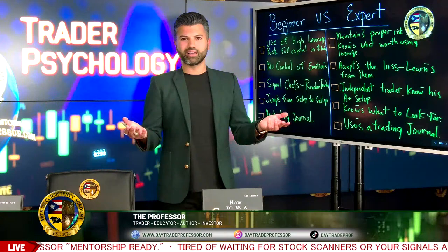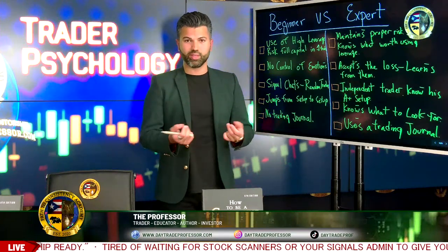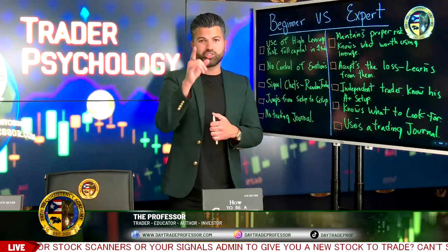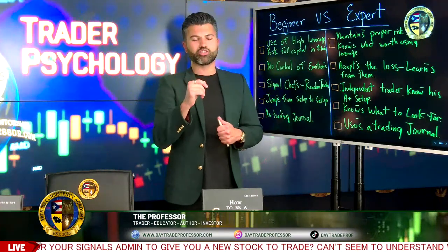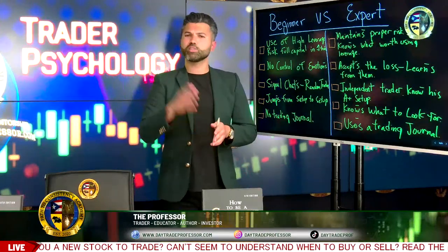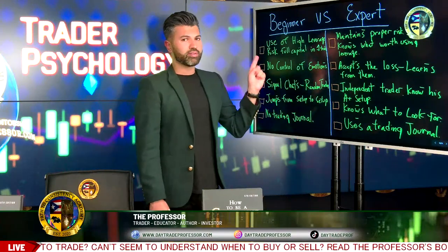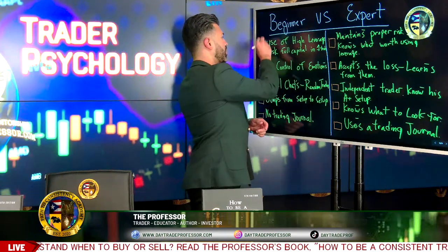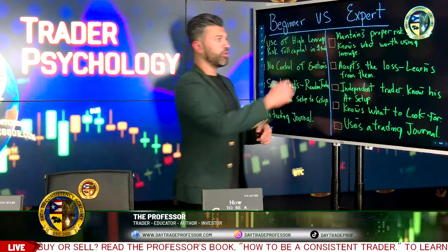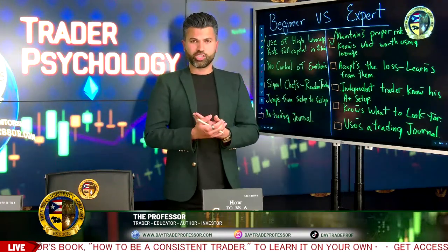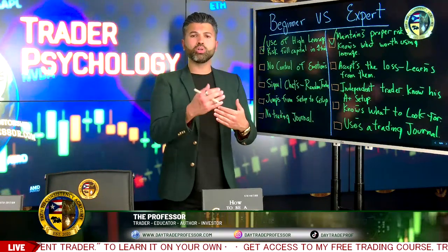TradeZero is the broker I use — click the link in the description below. Stop putting everything into one trade. What I tell my students is start off with one share, five shares, ten shares — increments of five — and slowly learn the process. For those of you doing options, stick to singular contracts: one, two, three contracts. That helps immensely, especially on your psychology.